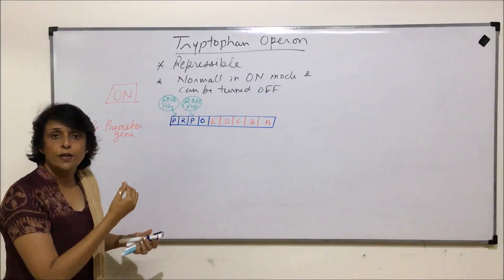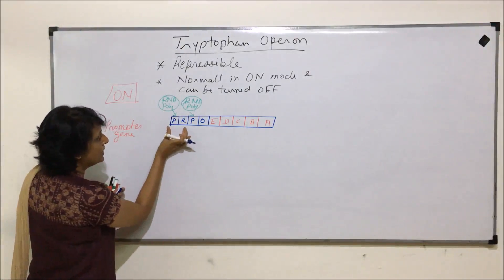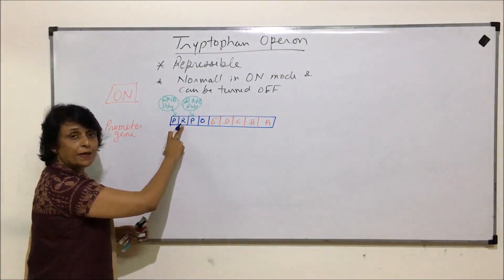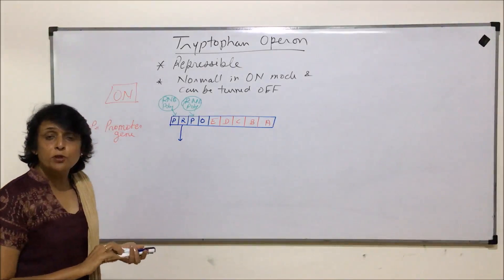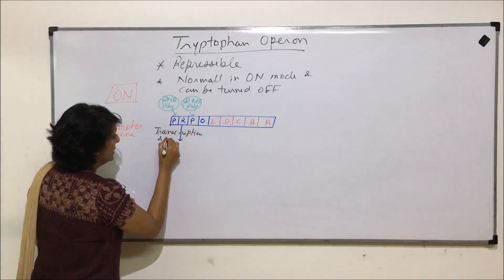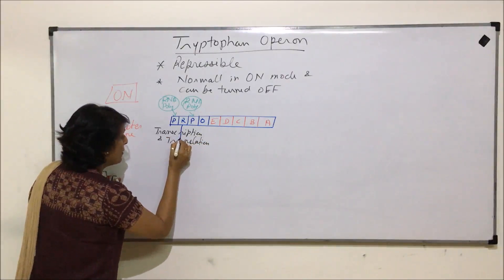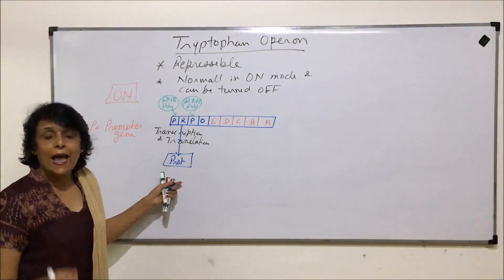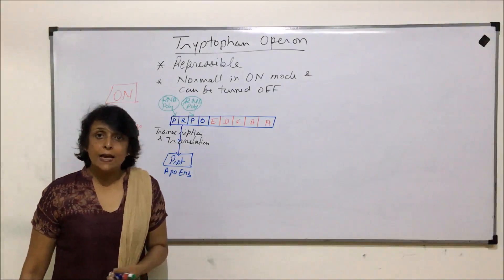In normal situation we said this operon remains in ON mode, meaning this process is continuously taking place. When RNA polymerase slides over the repressor gene — we're talking about only those first two genes, the promoter gene where the polymerase is attached and the repressor gene — the repressor gene undergoes transcription and translation.